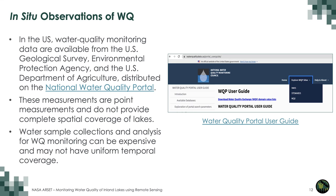In the US, water quality monitoring data are available from the USGS, EPA, and the US Department of Agriculture, distributed through the NASA Water Quality Portal. Multiple years of data for multiple lakes and streams are available through this site. However, these measurements are point measurements and do not provide complete spatial coverage of water bodies. Water sample collections and analysis can be expensive and may not have uniform temporal coverage — measurements are often infrequent and not uniformly distributed in time or space.